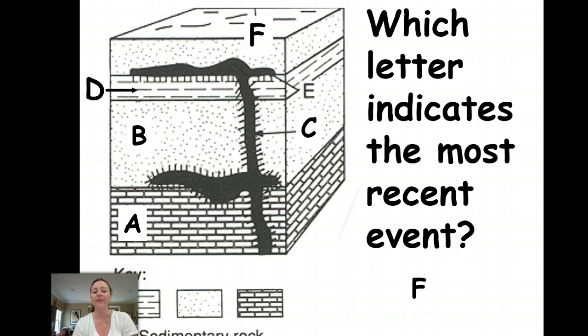Well the top layer F is the youngest in this case. If you look we can tell that the igneous intrusion came up through the rock layer and hardened at the top of deposition D.